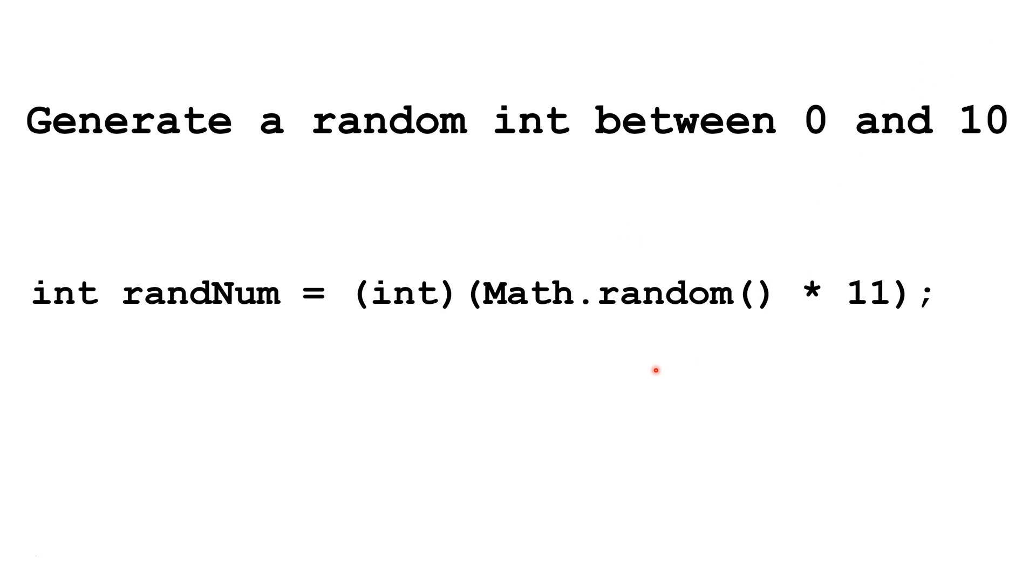Now, let's try it on the other end. The maximum value Math.random could return is 0.9 repeating. If we multiplied that by 11, we would get 10.9 repeating. And, when we cast that as an int, we would get 10.